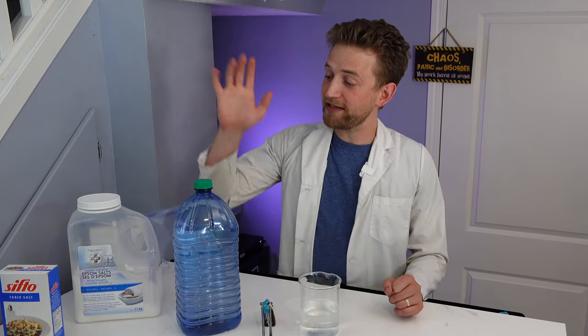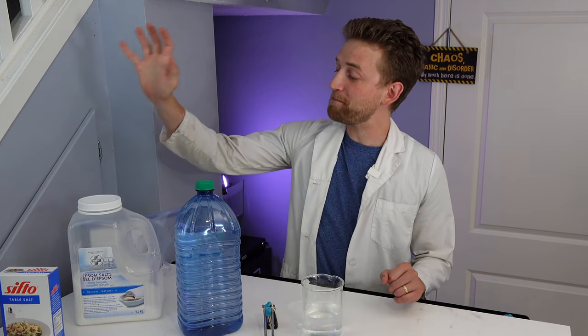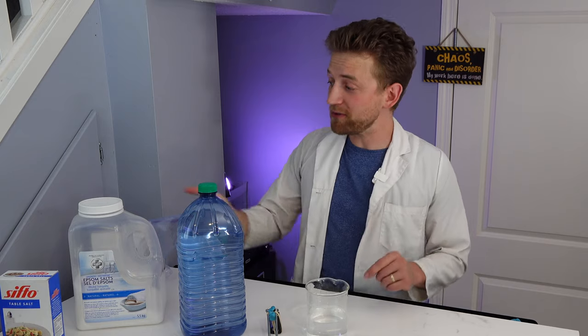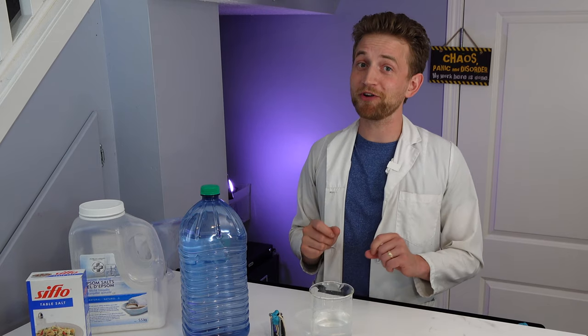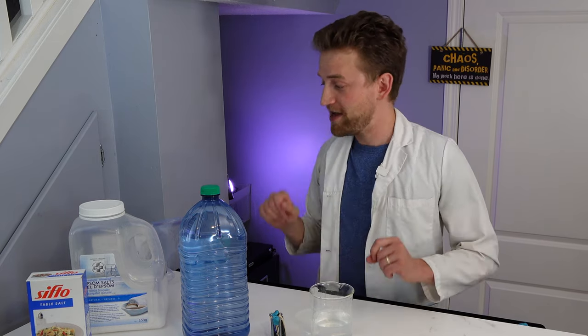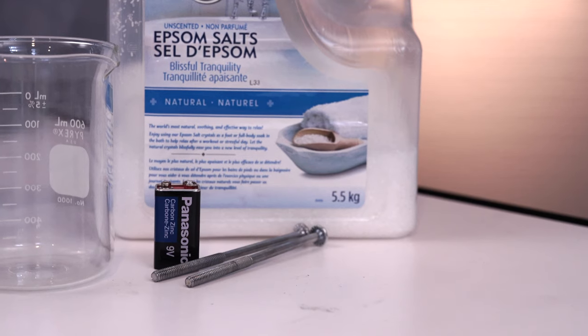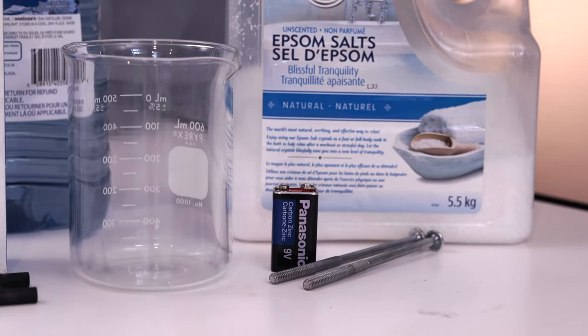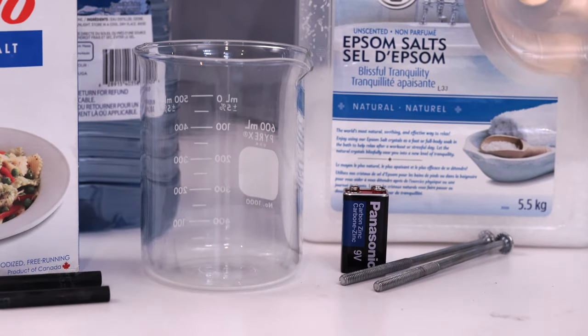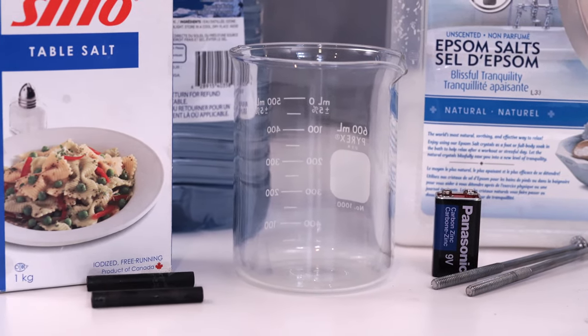We're gonna start off with distilled water and magnesium salt. If you're doing this at home make sure you use magnesium salt and not table salt because the table salt is the thing that creates chlorine gas and you don't want that. You want oxygen not chlorine gas. If you're doing this at home you need a 9 volt battery, some diodes like screws, a container to hold the water in, some distilled water, and magnesium salt.